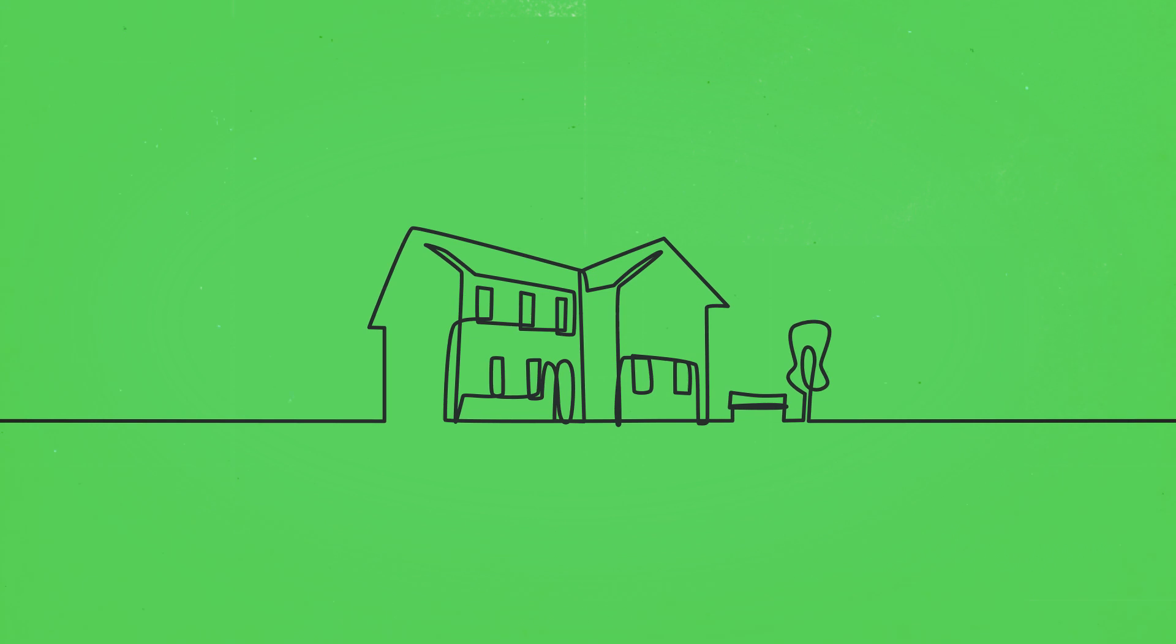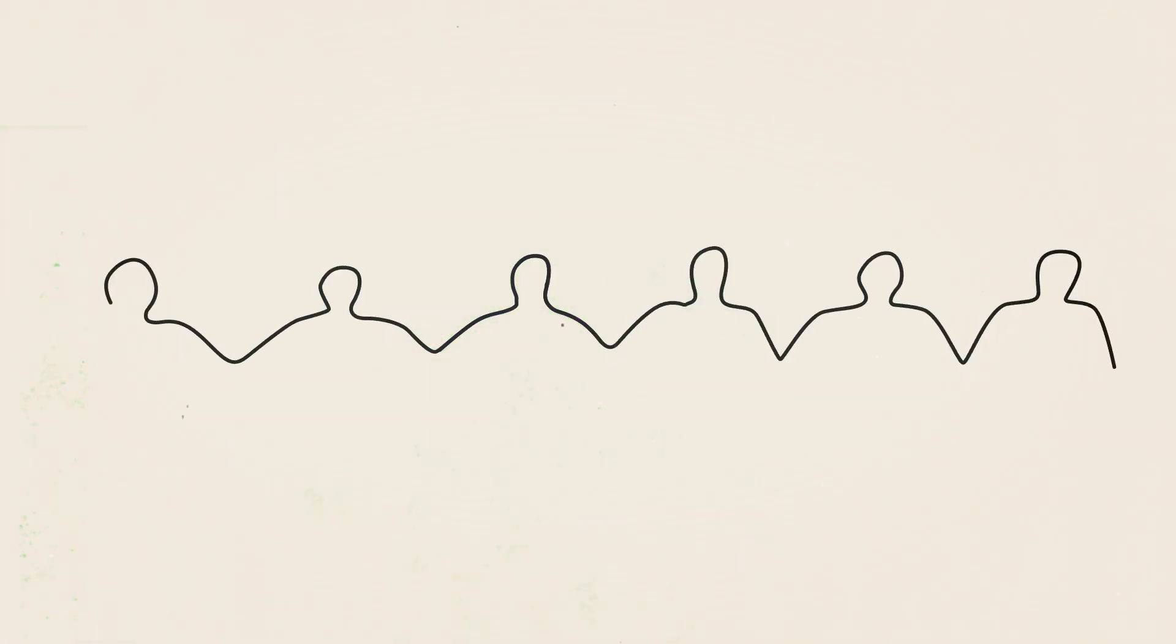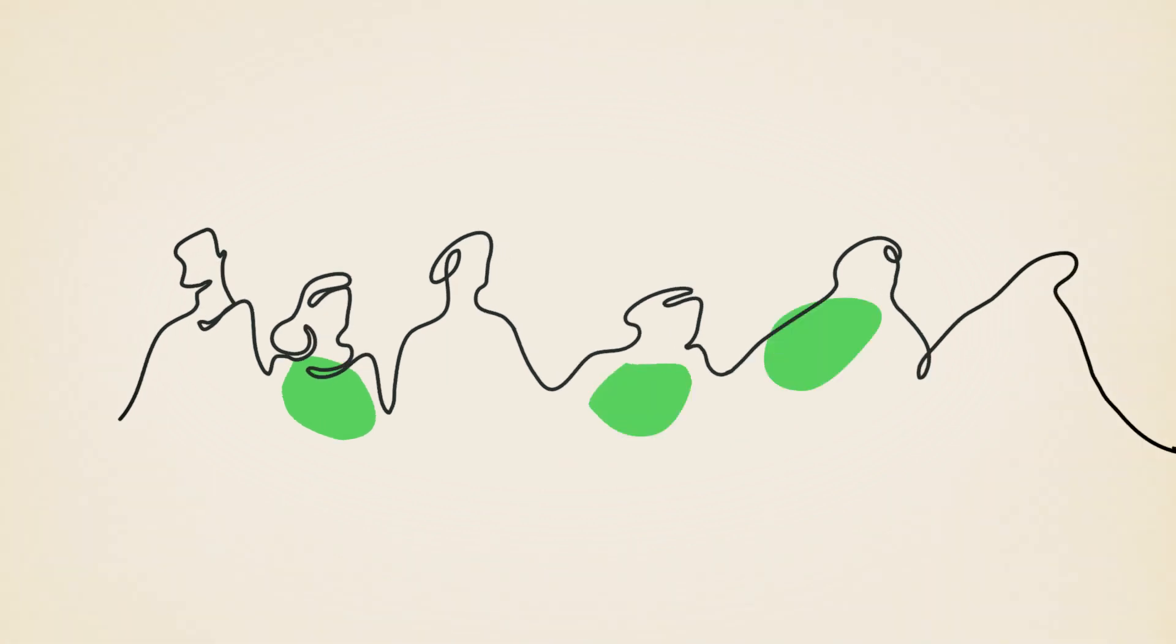We'll realise only some older people live in nursing homes, only some are hard of hearing, and only some have dementia. Thinking all older people are the same will be as absurd as thinking all younger people are the same.